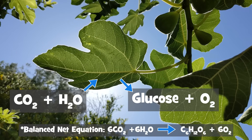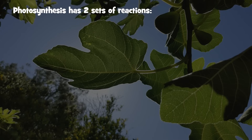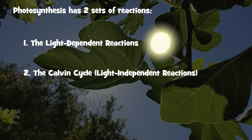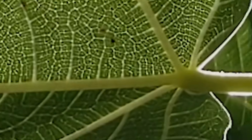Photosynthesis can be divided into two sets of reactions: one, the light-dependent reactions, and two, the Calvin cycle. The light-dependent reactions, as you might have guessed, depend on light. To understand how these work, let's zoom in on a leaf so we can see them happen.